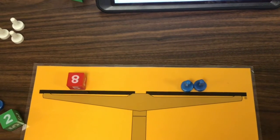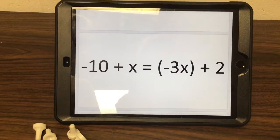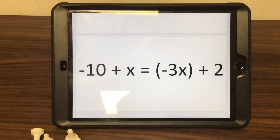So my second problem is negative 10 plus x equals negative 3x plus 2.